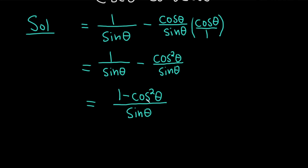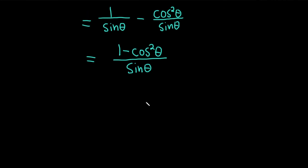1 minus cosine squared is a familiar identity. It's sine squared. So this is equal to sine squared theta over sine of theta.